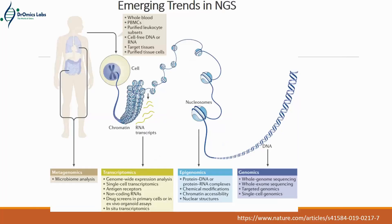Here is an example of what you can do with NGS. A cell has many components — chromatin, RNA, nucleosome, and DNA. For healthy versus disease comparisons or finding rare variants in genetic diseases, you can extract whole blood, PBMCs, or cell-free DNA. Cell-free DNA is a relatively new field and is useful for studying cfDNA for biomarker analysis.